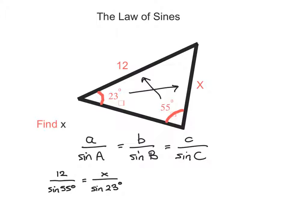So we can bring this one up and multiply, this one can stay where it is, so therefore we get that x equals 12 times sine 23 divided by sine 55 degrees. And you get your calculator out, and therefore x equals 5.72.